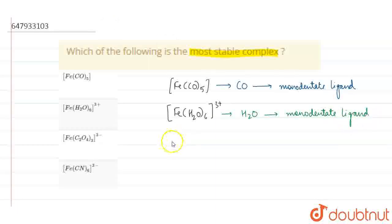The third complex is Fe(C2O4)3^3-. Now, C2O4^2- is the oxalate ion. What is its structure?